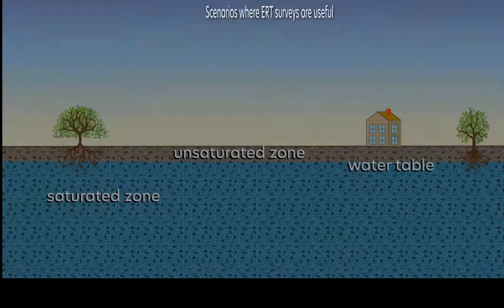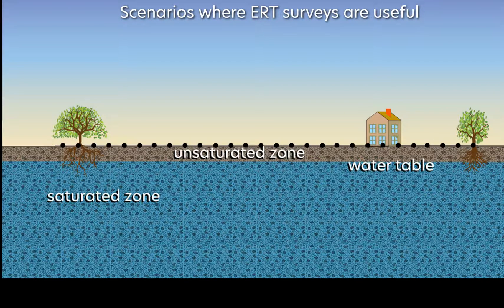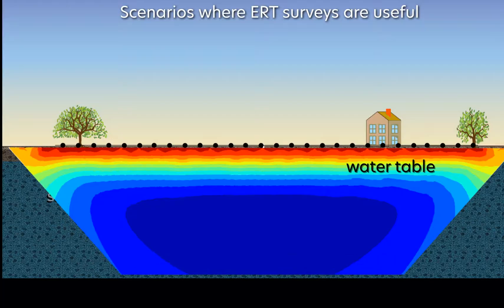Here are some other scenarios where ERT surveys can be useful. Unsaturated soil has higher resistivity than the same soil, saturated, so a resistivity survey can help locate the depth of the water table.